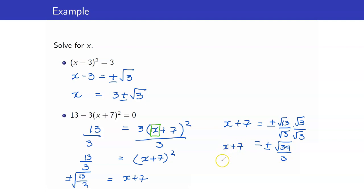And therefore, x is equal to negative 7 plus or minus square root of 39 over 3.